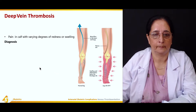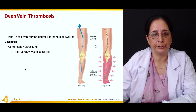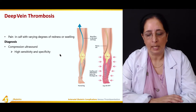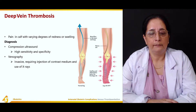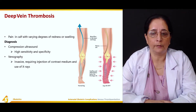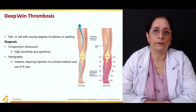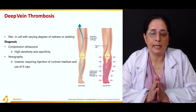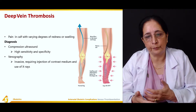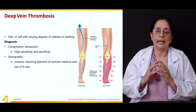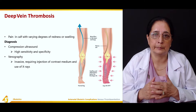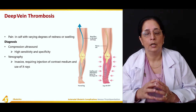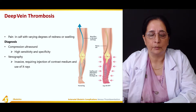Diagnosis is by compression ultrasound, which has high sensitivity and specificity. Venography is a more invasive method requiring injection of contrast medium and use of X-rays. Two methods are used: ultrasound and venography. The obstruction is localized and relieved by procedures or anticoagulant drugs are used.